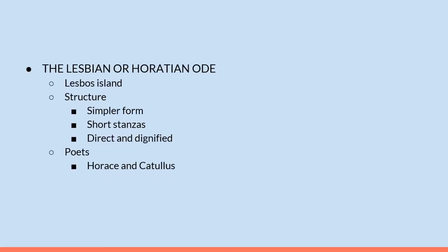The second type of ode is the Lesbian or Horatian ode. The Lesbian ode was named after the island of Lesbos where it originated. It was simpler in form than the Pindaric ode and proved easier for poets to follow. It consists of a number of short stanzas similar in length and arrangement. The treatment is direct and dignified and clearly developed. The Lesbian ode was popularized in Latin by two great Roman poets, Horace and Catullus.